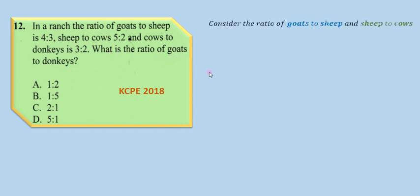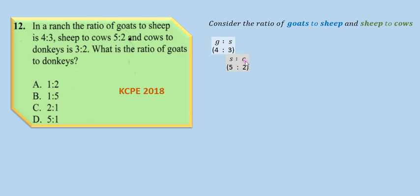To start, I want us to consider the ratio of goats to sheep and sheep to cows. It is given that the ratio of goats to sheep is 4:3 and the ratio of sheep to cows is 5:2. What we shall do in this case is to ensure that we have the same number of sheep linking both ratios.